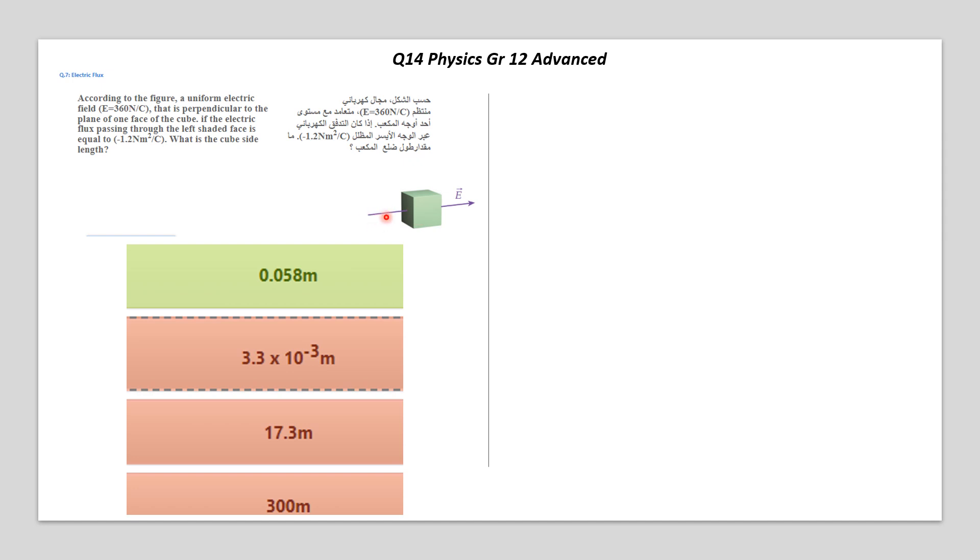If the electric flux passing through the left shaded face, which is this one here, is equal to minus 1.2 newton meter squared per coulomb, what's the cube side length?